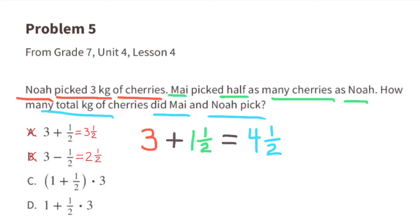Option d: 1 plus one-half times 3. That can be rewritten as 1 plus one-half times 3. Since one-half of 3 is 1.5, we can rewrite this as 1 plus 1.5, and that equals 2.5, so this is also not equivalent. Finally, let's look at c: 1 plus 1 plus one-half times 3. One plus one-half is 1.5, and 1.5 times 3 equals 4.5. So expression c is equivalent.